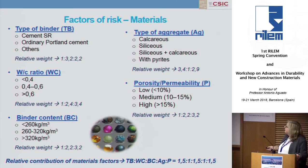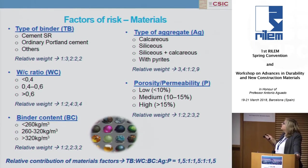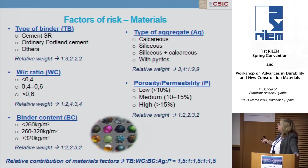With respect to binder content, we have also defined three possibilities: below 260 kg/m³, between 260 and 320, and higher than this value. With respect to aggregates, we divided into four possible types: calcareous aggregates — due to their influence on thaumasite formation — siliceous aggregates, a mix of siliceous and calcareous, or aggregates with pyrites or pyrrhotites due to the possible formation of internal sulfate attack. And with respect to porosity or permeability: low, medium, or high permeability.